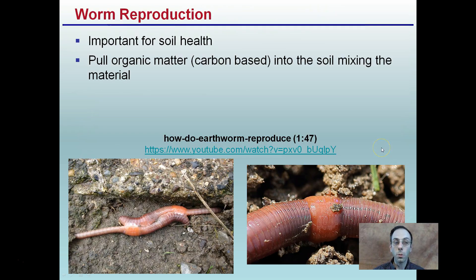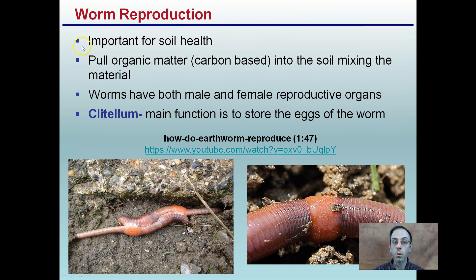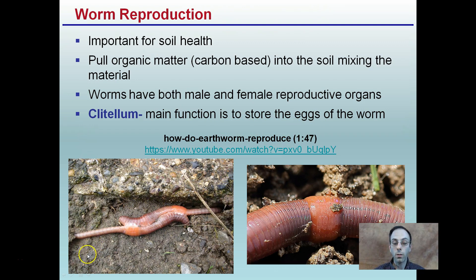Worm reproduction is very important for soil health. They pull organic matter — typically carbon-based — into the soil, mixing the material. Worms have both male and female reproductive organs. The clitellum is the main structure that stores the eggs of the worm, located right here. This is earthworms mating — a rare sight to see. They're very sensitive to ground movement, and if you walk heavily on the ground, both worms quickly retreat into their burrows below ground.